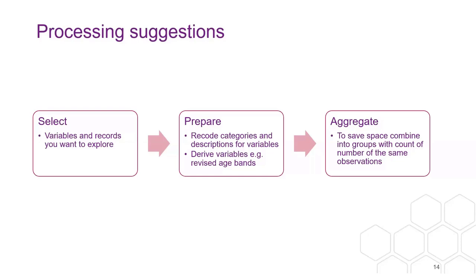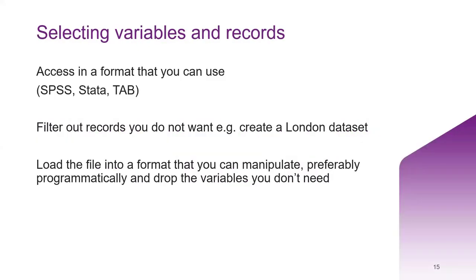Once you've selected those, you might go through recoding the categories. Then what I've tended to do is aggregate those into groups with counts and use those counts and weights. I'd suggest loading the file into a format that you can manipulate programmatically — using code of one form or another — so you can reproduce the analysis fairly straightforwardly, without the issues that arise from doing it manually.